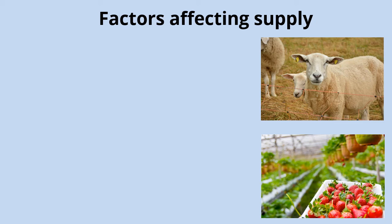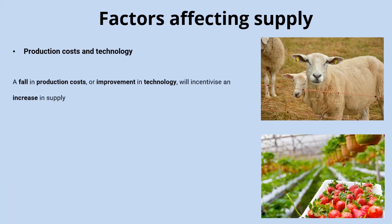Just like with demand, there's a wide range of factors that affect producers' willingness and ability to supply products to a market. The first is production costs and technology: if producers experience a fall in production costs, that makes it more profitable to supply output and incentivizes them to increase supply. Similarly, technological improvements decrease production costs per unit — they can produce more output with fewer resources — and that also incentivizes them to supply more.